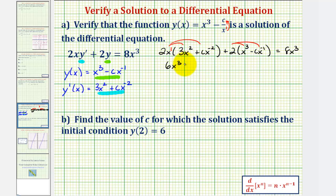So we'll have plus 2c, x to the power of negative one. And then we have plus 2x³. And then minus 2c, x to the negative one.